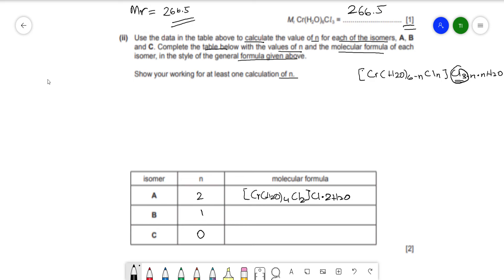And you write that for here. [Cr(H2O)5Cl]Cl2·H2O. So 6 minus 1, that's 5, Cl, Cr, and Cl2·H2O.